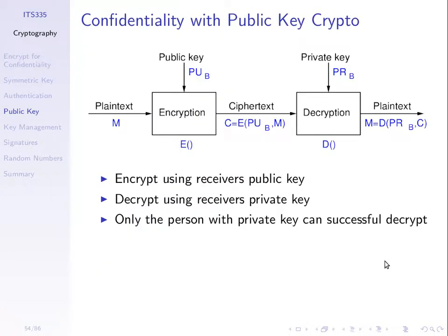For confidentiality, we encrypt with the destination's public key, and the destination decrypts with their private key. The assumption is that to successfully encrypt and then decrypt, we must use the same keys in the key pair, but the opposite one. That is, if we encrypt with one key in the key pair, it will only decrypt using the other key from that same key pair. If you try to decrypt with a different key, it won't work.